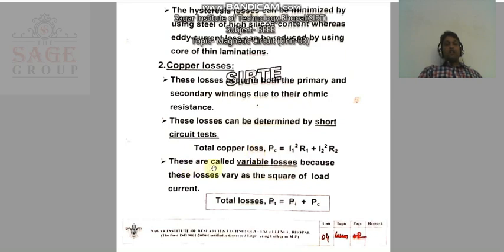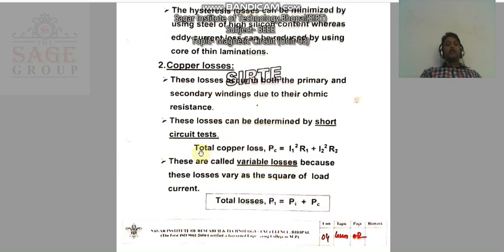Copper losses are also called variable losses because they vary as the square of the load current. In contrast, core losses are fixed losses because the flux in the core remains constant.